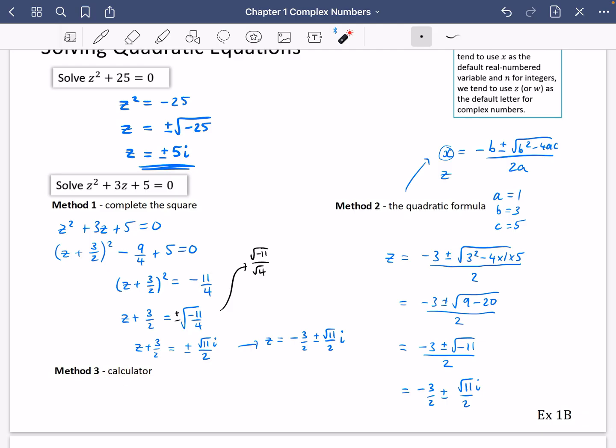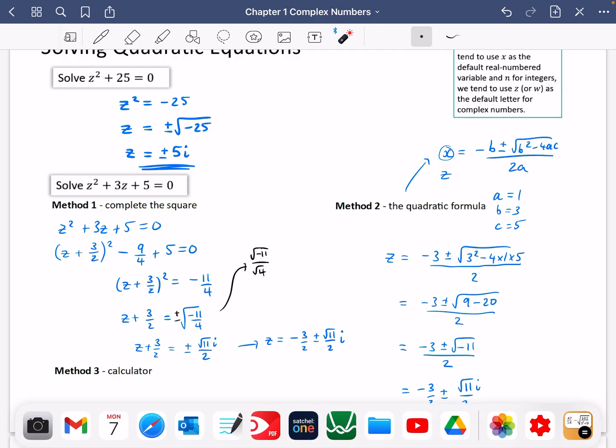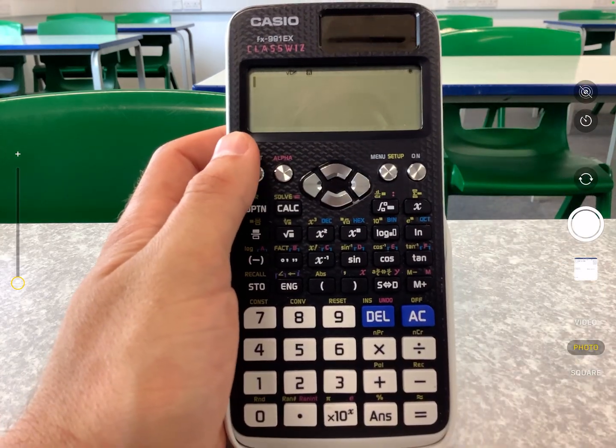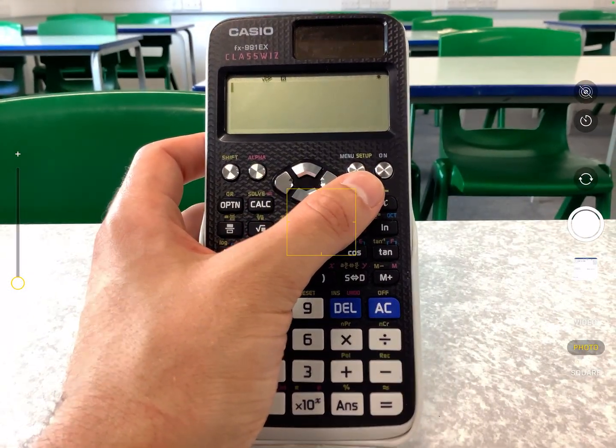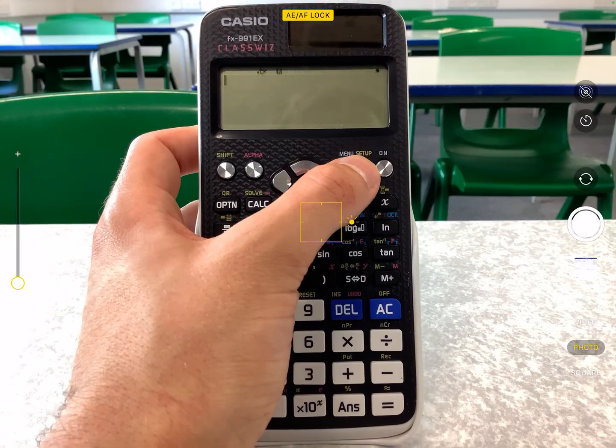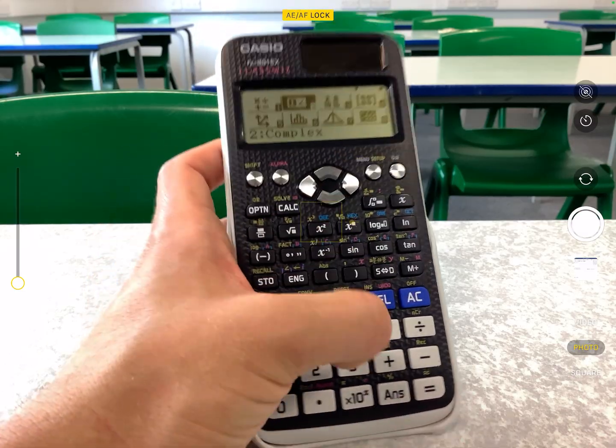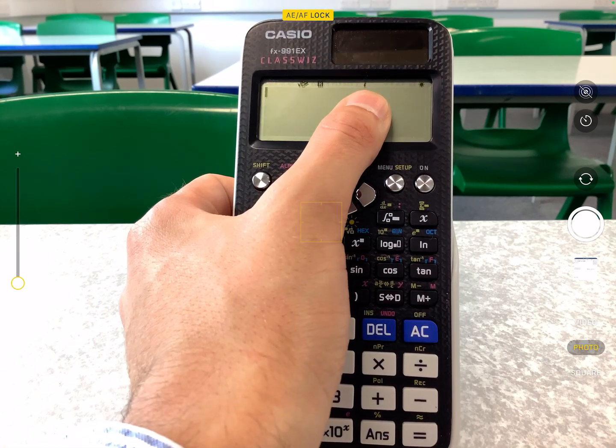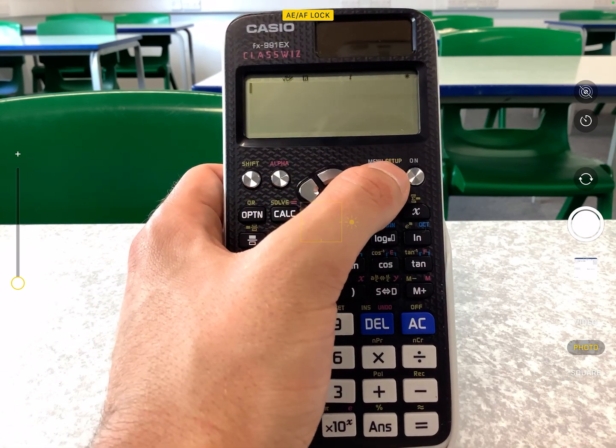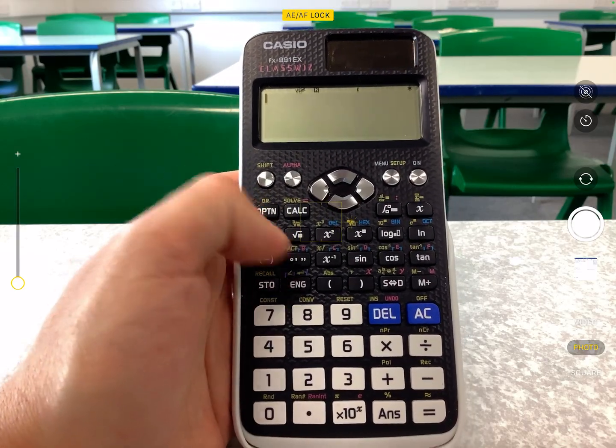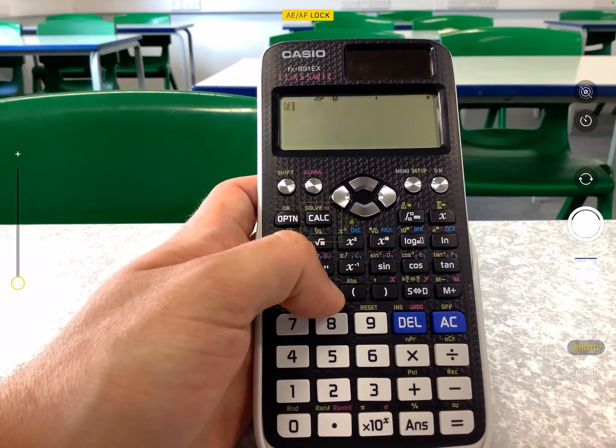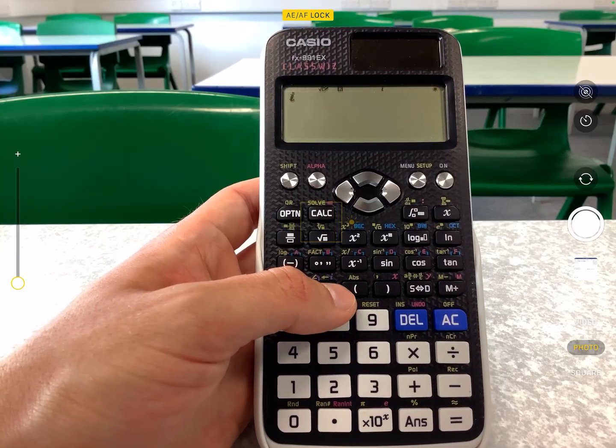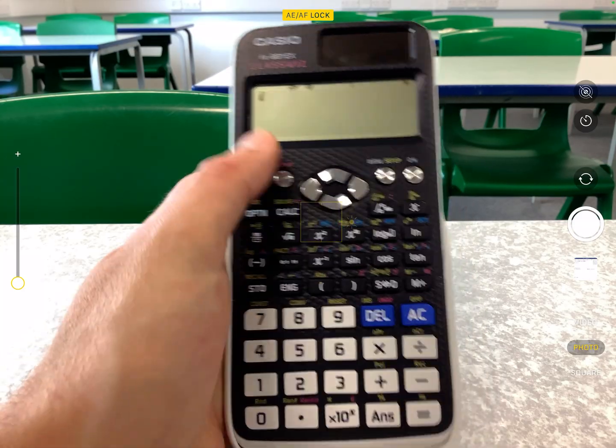So we're going to have a look at method 3, which is using a calculator. So it's going to show you how you can do this using both the ClassWiz and the graphics calculator. So if I just show you the calculator that I've got here, what you might need to do is you might need to go into the menu, and you might need to activate the complex mode, which is number 2. So when you go to complex mode on the ClassWiz, it then should have a little i at the top that tells you that it has been activated. Now if you don't know how to do this, if you want to do any calculations with complex numbers, you can press, I think, just this eng button, there's a little purple i above it.